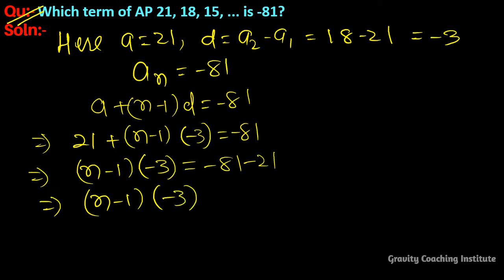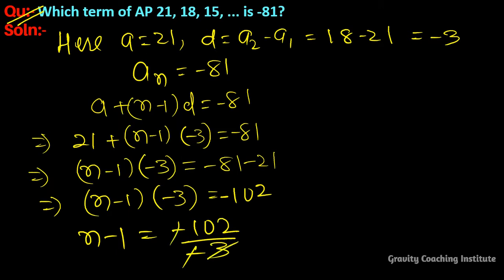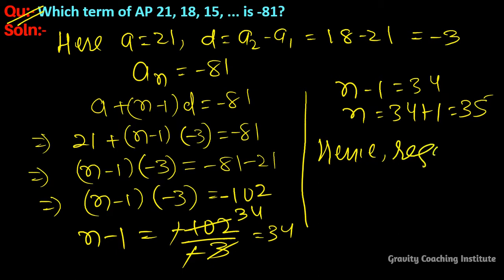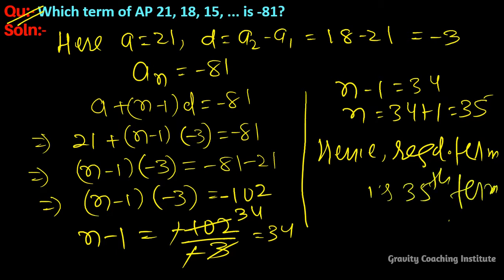So (n-1) × (-3) = -102, which gives n-1 = -102 divided by -3. The negatives cancel, and 102 divided by 3 equals 34. So n-1 = 34, meaning n = 34 + 1 = 35. Hence the required term is the 35th term.